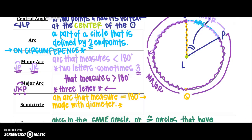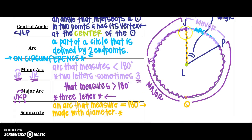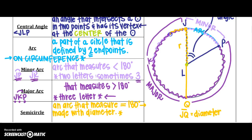A semicircle is an arc that measures 180 degrees. Since JL is a radius, if I continue my radius through the center to point Q, then JQ would be my diameter. The diameter makes a semicircle. So I could say that arc JKQ is a semicircle, or going the other way, arc QPJ is also a semicircle.